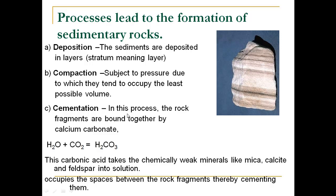In cementation, the fragments of rock are bound together mainly by calcium carbonate. Acidic water is the primary agent in the cementation process. H₂O plus CO₂ equals carbonic acid. This carbonic acid takes chemically weak minerals like mica, calcite, and feldspar into solution, and they occupy the space between the rock fragments, thereby cementing them together. In this manner, the cementation process gives birth to a sedimentary rock.